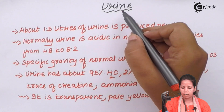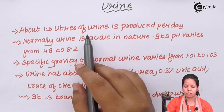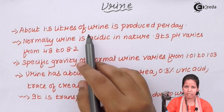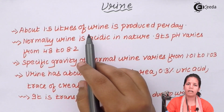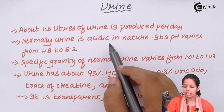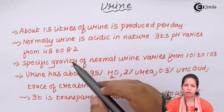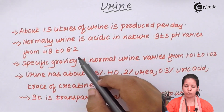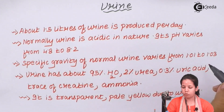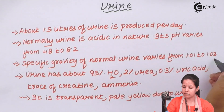Now if I talk about urine, the amount produced is approximately 1.5 liters in an adult human being. Normal urine is acidic in nature and its pH varies from 5.8 to 8.2. The specific gravity of urine is approximately 1.01 to 1.03.